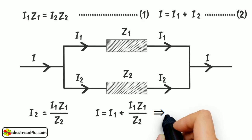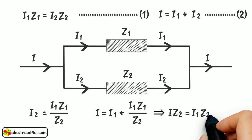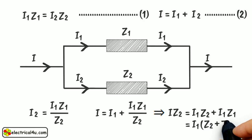It implies IZ2 equals to I1 Z2 plus I1 Z1, equals to I1 into Z2 plus Z1.